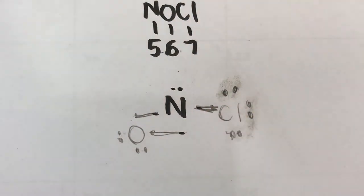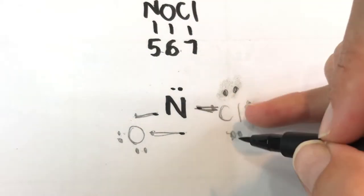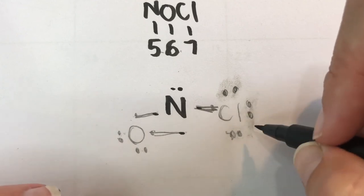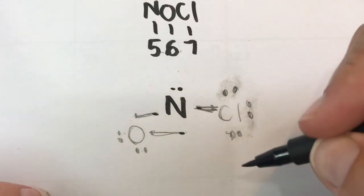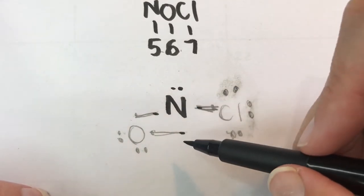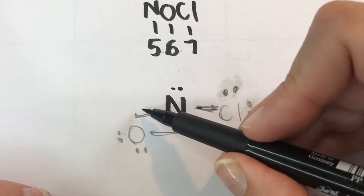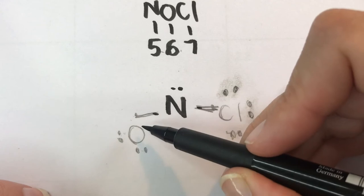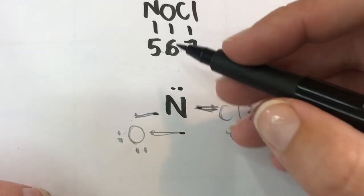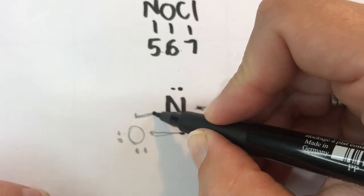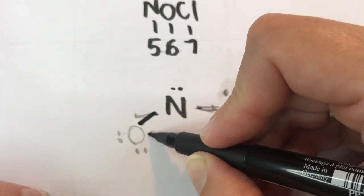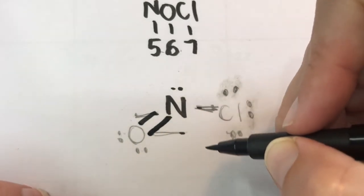So the reason I suggested pencil first was so that you can erase any mistakes and go over it to make it look a little bit nicer if you need to. So here this is a double bond; we have two bonds between nitrogen and oxygen, but it doesn't look like it when we have it like this, so instead we're going to change it to something that looks more like a double bond.